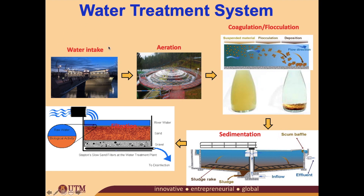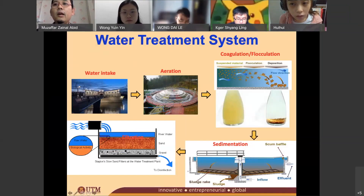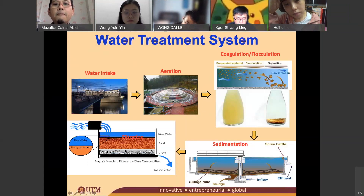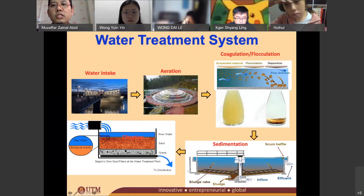Then it proceeds to the aeration process, whereby you have to aerate the water. By aerating the water, you should be able to remove certain pollutants. Then it goes to the next process by adding chemicals — coagulation and then flocculation — which will produce bigger size particles.